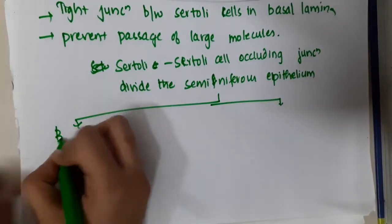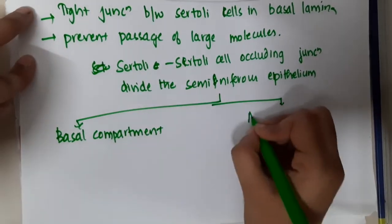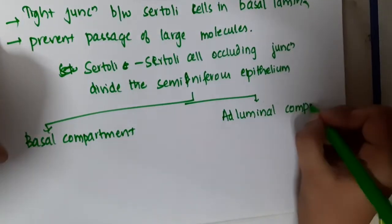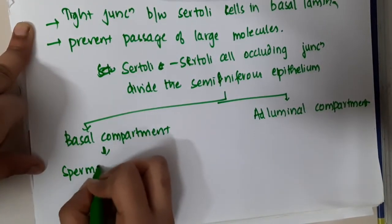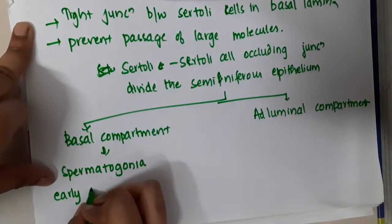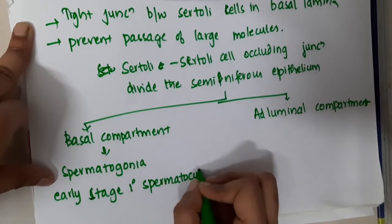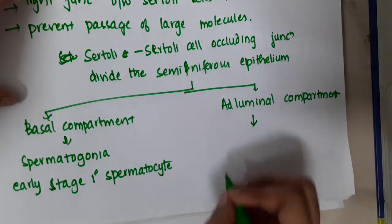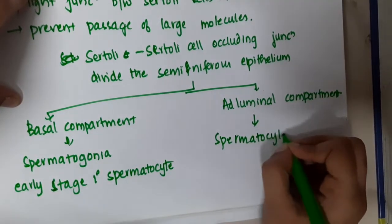One is called the basal compartment and the second is called the ad luminal compartment. The basal compartment contains spermatogonia and early stage primary spermatocytes, whereas the ad luminal compartment contains spermatocytes and all the other later stages.